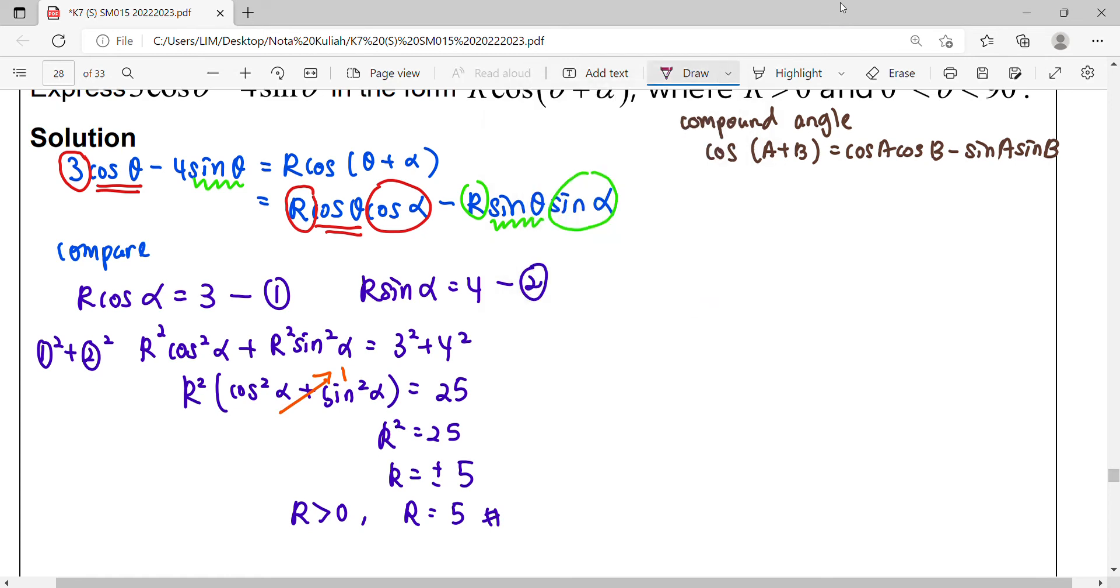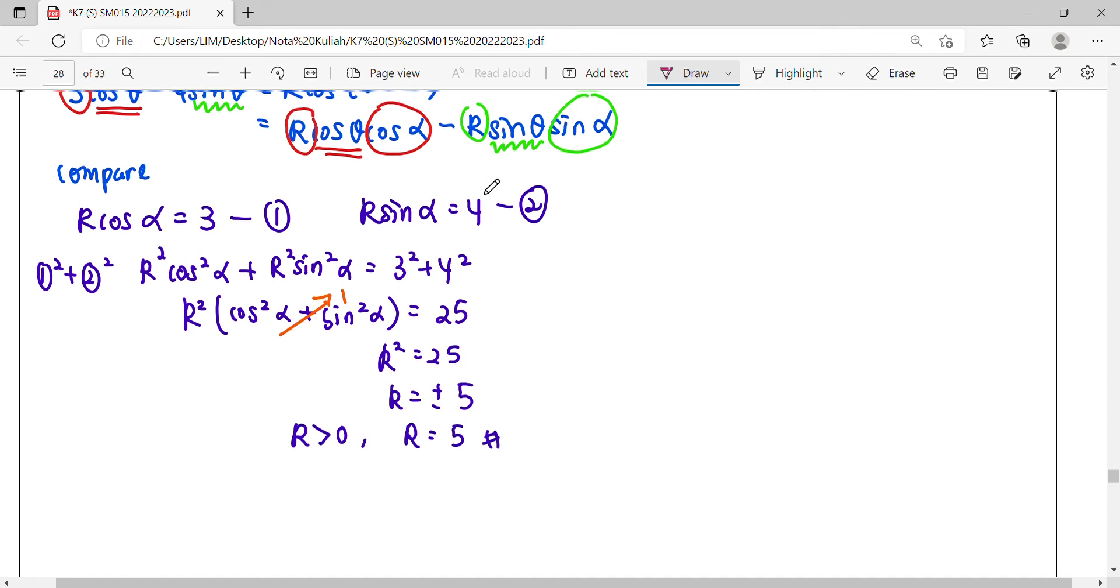Then we proceed to solve the equation to get the unknown α. To get α, we're going to get the term of tangent. To get tangent, we're going to take sine over cos, so equation 2 over equation 1. At the same time, the constant R can be eliminated.